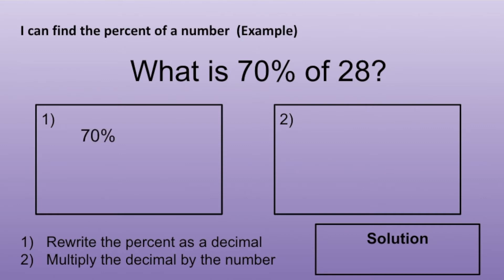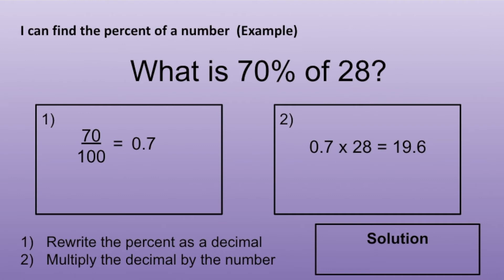So we start off with 70%. In order to write a percent as a decimal, we need to remove the percent sign and then divide by 100. So 70% as a decimal is 0.7. Moving on to Step 2: multiply the decimal by the number. 0.7 times 28 equals 19.6. So 70% of 28 is 19.6.